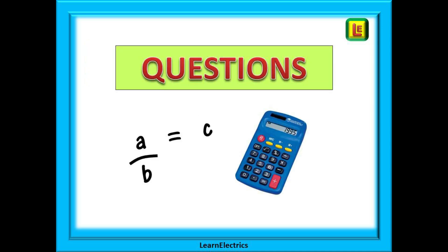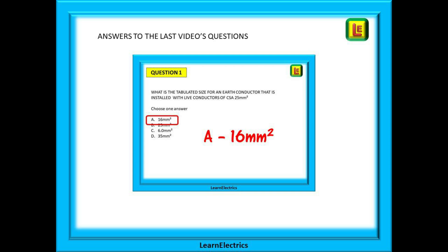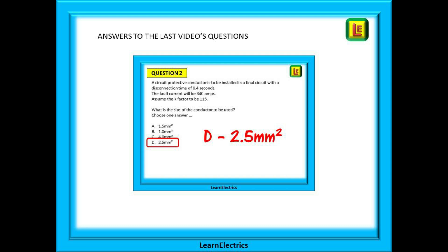Hopefully you've learned a lot in this video. Practice really is the key to being good at calculations, and it makes you look competent and professional on site. Let's leave you with some questions to try on your own. But first, the answers to the two questions on adiabatic equations from the last 18th edition video. Question 1 was answer A, 16 millimeters, and question 2 was answer D, 2.5 millimeters.